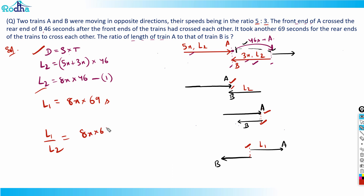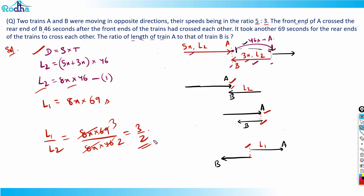Now the ratio L1 to L2 equals (8x × 69) divided by (8x × 46). The 8x cancels, giving 69 over 46, which simplifies to 3 to 2. So the answer is 3/2.